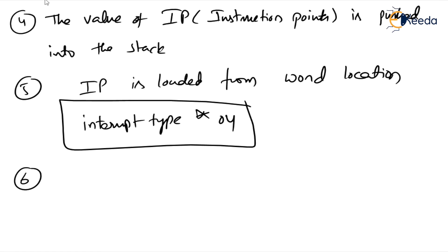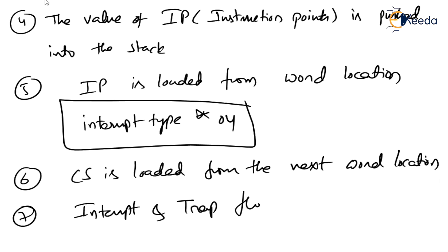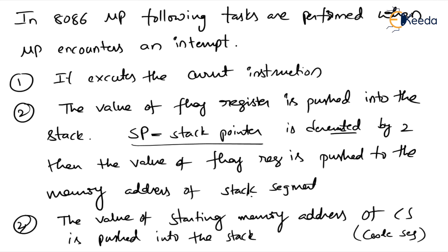Sixth step: CS is loaded from the next word location. Seventh step: the interrupt flag and trap flag are reset to 0. So these are all the steps involved — when the interrupt occurs, the 8086 microprocessor performs all these tasks: decrement SP, push flags, push CS, push IP, load IP from interrupt type × 4, load CS from next word location, and reset interrupt and trap flags to 0.